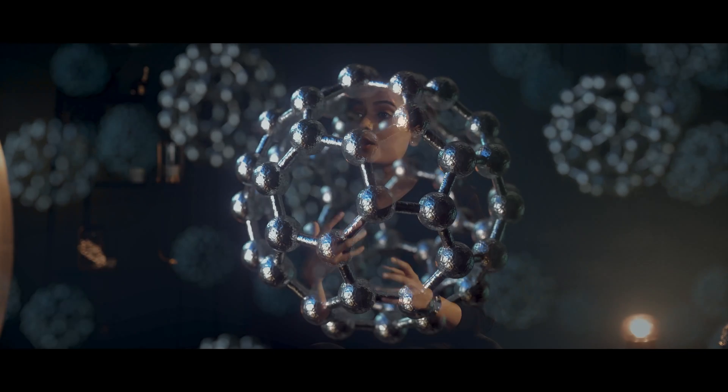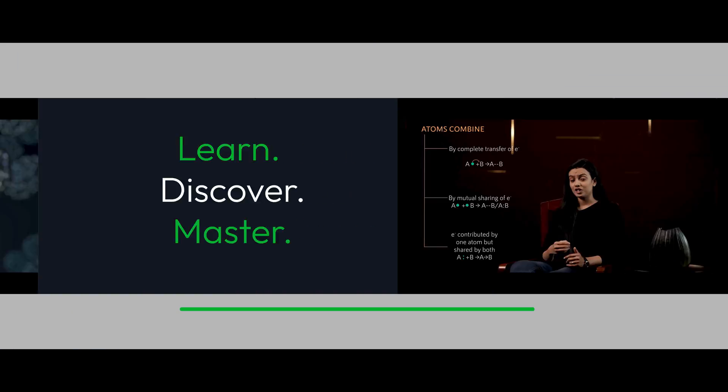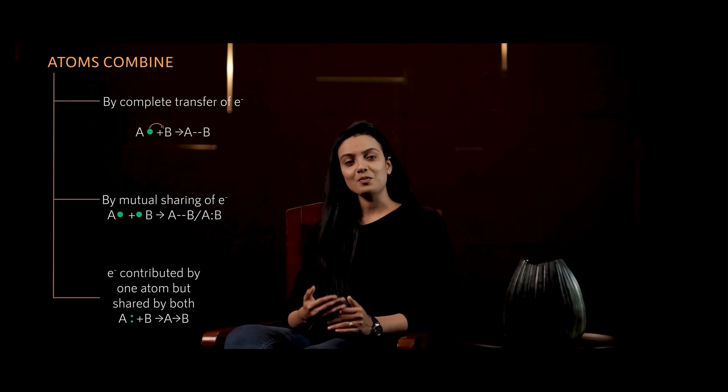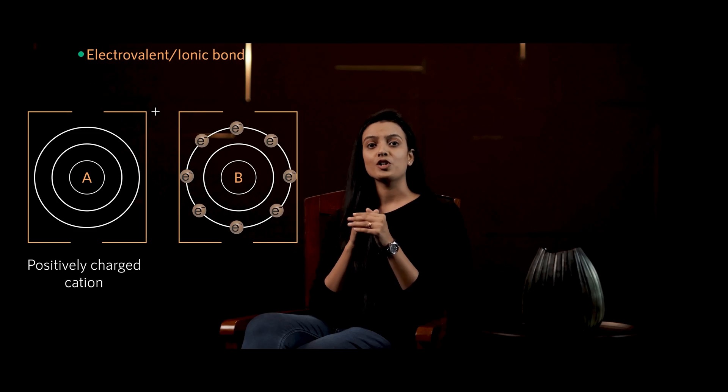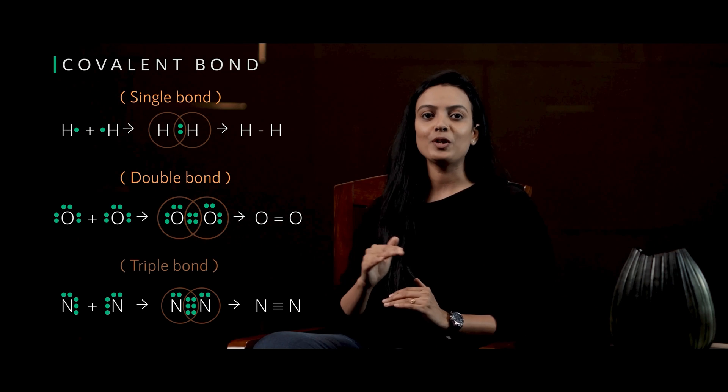In this course of chemical bonding and molecular structure, we are going to study about how a bond is formed, and the types of bond — that is ionic and covalent.